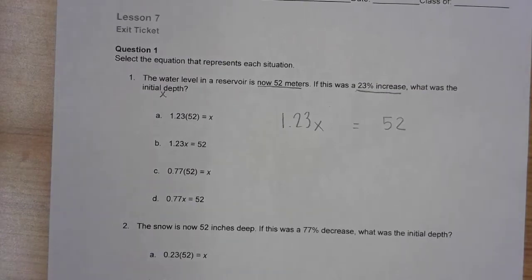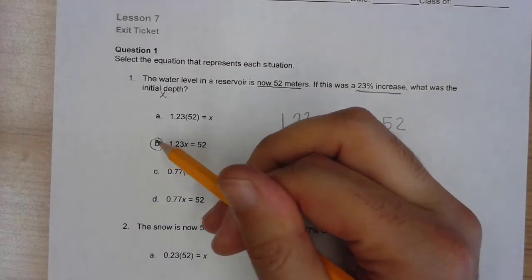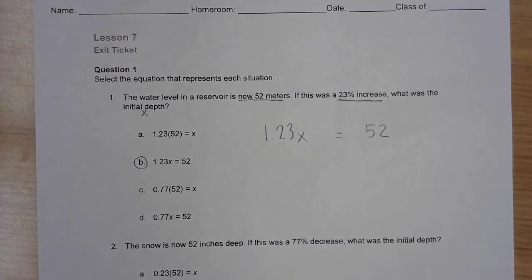123% can be represented as 1.23X is equal to 52. Immediately this does not require that much work, so you can tell which one of these answer choices is the correct one - that is answer choice B. However, when dealing with multiple choice questions, if you have the time to check your work, I would be going through every single answer choice.